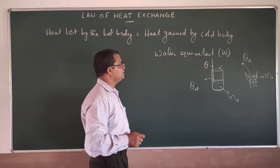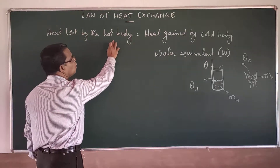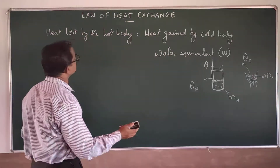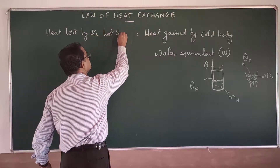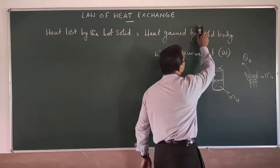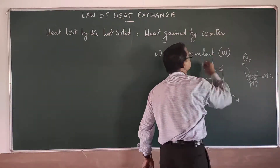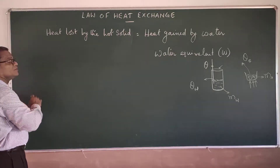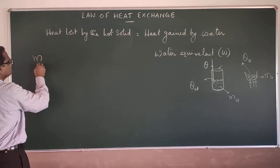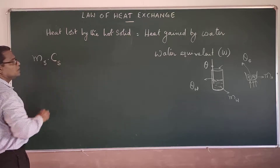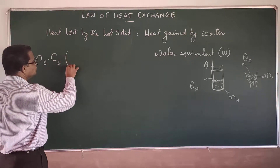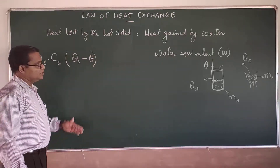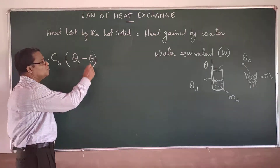At this particular state, we can write that heat lost by the hot body equals heat gained by the cold body. So heat lost by the hot solid equals heat gained by the water. Substituting the formula for heat energy: mass of solid × specific heat of solid (which is what we want to determine) × decrease in temperature of solid, that is (θ_S − θ), will be equal to the heat gained.